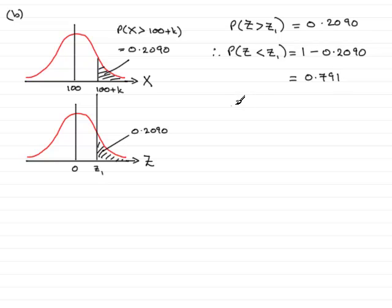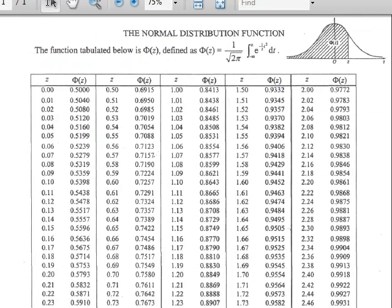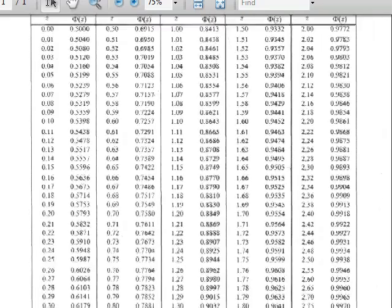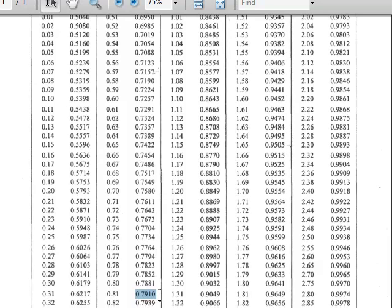Now, in tables, this is often represented as the phi of Z, which in this case is Z1, is going to be 0.791. So what we've got to do is look up in the tables where we can see this point, 0.791, for phi of Z. If we go to a set of tables, we've got our columns, phi of Z, and we're looking for 0.791. Looking through here, it's in this column. I'll just scroll this down, and here it comes, 0.791.